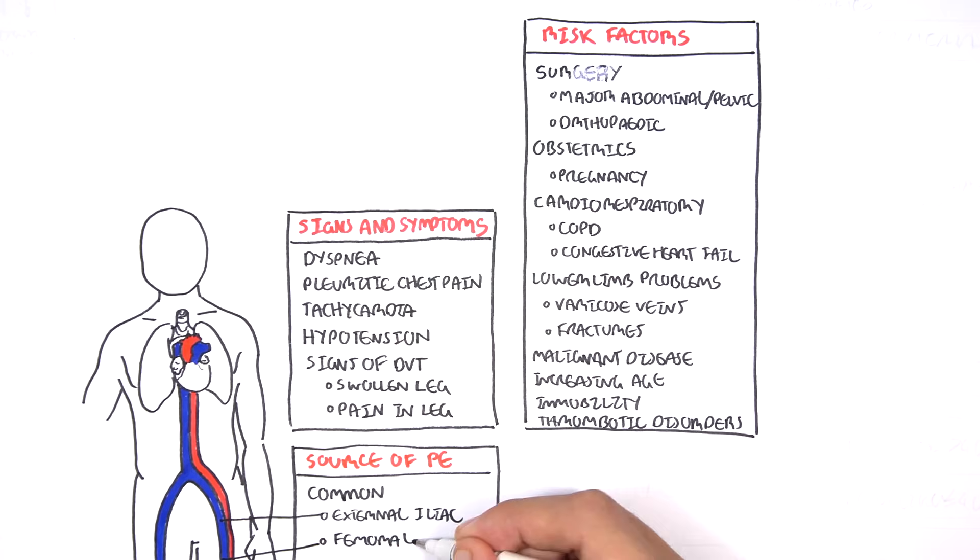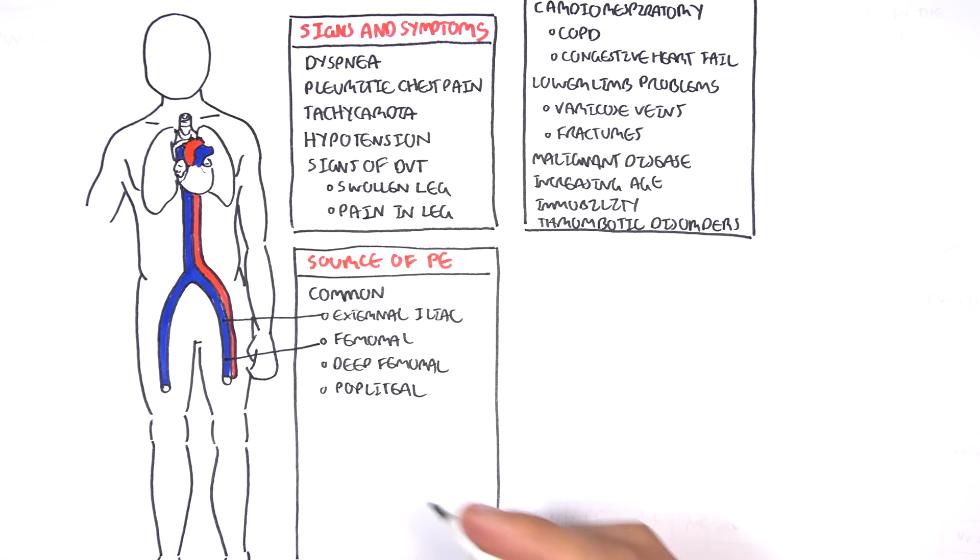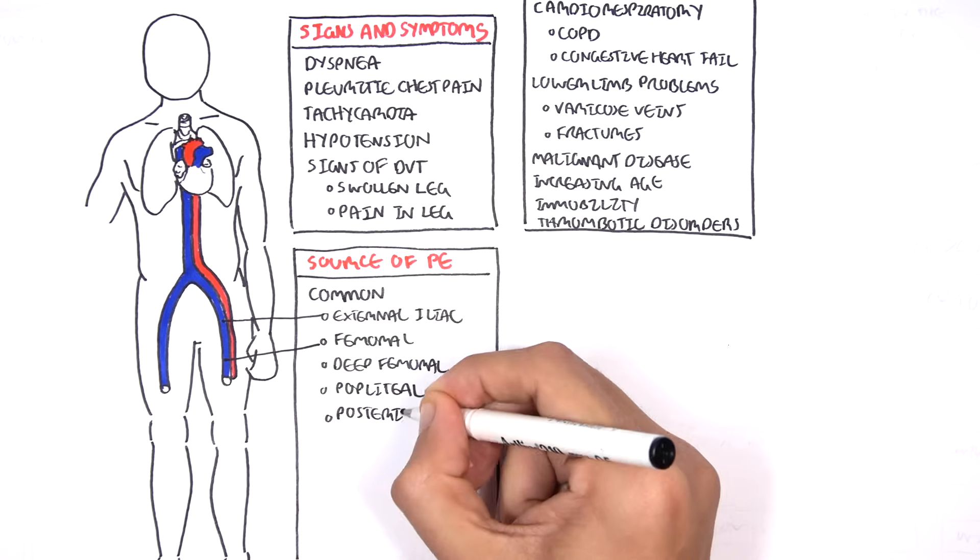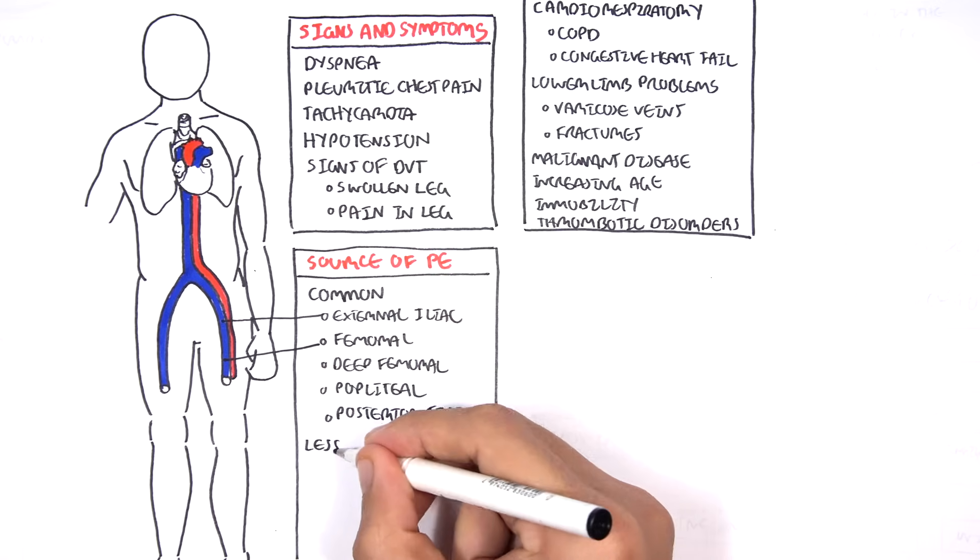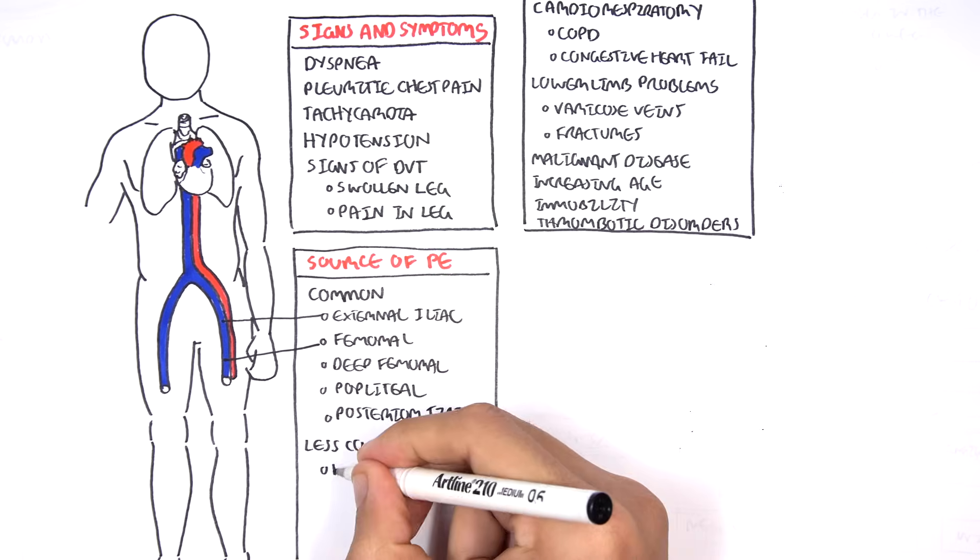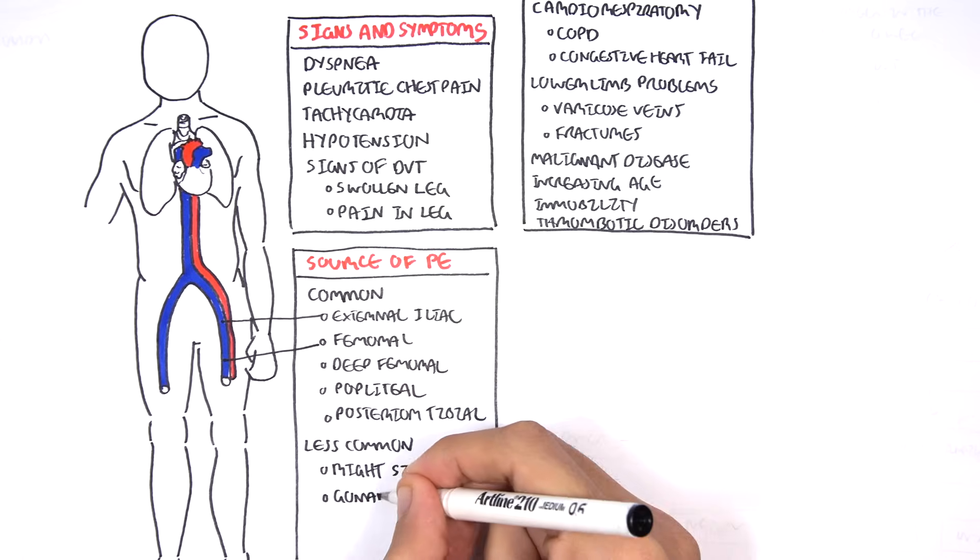They occur mainly from the lower limb deep veins. The common ones are your external iliac vein, your femoral vein, your deep femoral vein, your popliteal vein, and your posterior tibial vein. The less common sites where thrombi can occur and lodge into the lungs are...